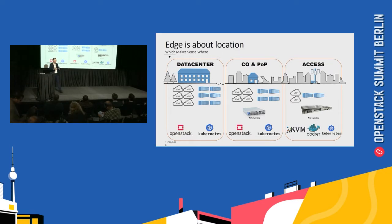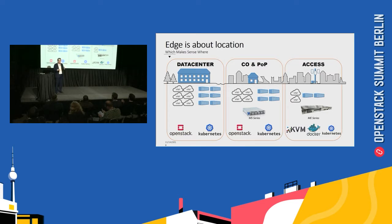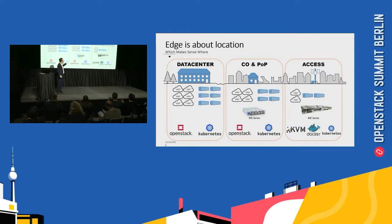So then what we do for edge and cloud computing. Edge — everybody talks about edge, nobody knows exactly where it is. I think it's funny because it's all about location. My point is it's about location, but we provide servers. You cannot put all the same server everywhere. So we have different products for different spaces in the network, especially for the central office, point of presence, or the access like street cabinet or cell site tower.